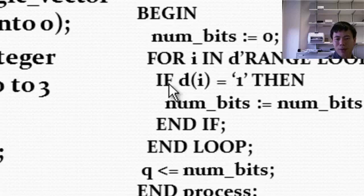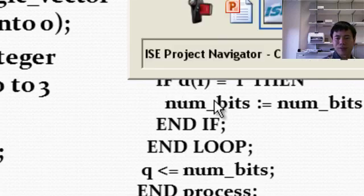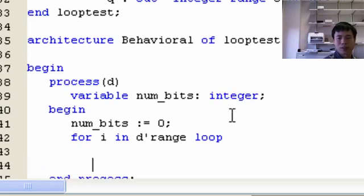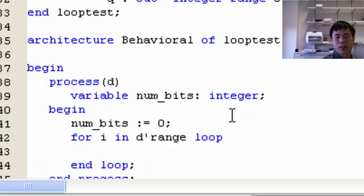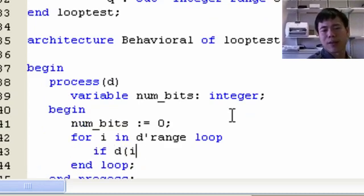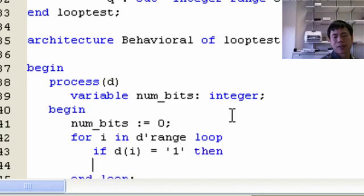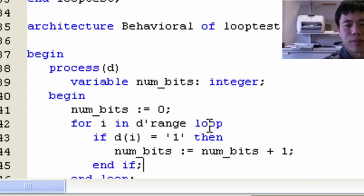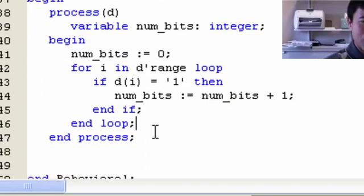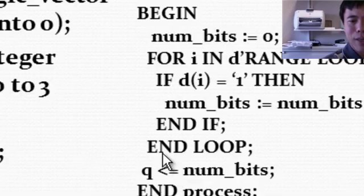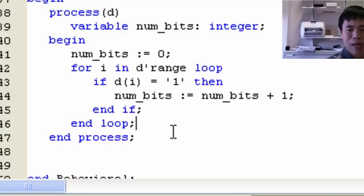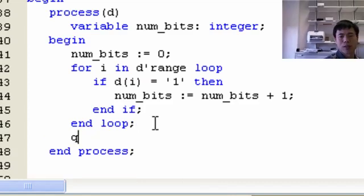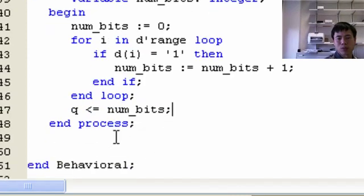Then after that, we have if else. We check, if D(i) is equal to 1, then num_bits equals num_bits plus 1. End if. Once we've done this for loop, after the end loop, we send the Q to the num_bits. After the end loop, we send num_bits to the output Q. And that's it.